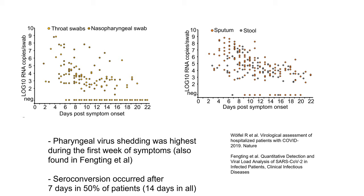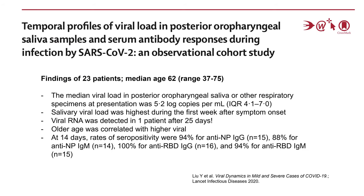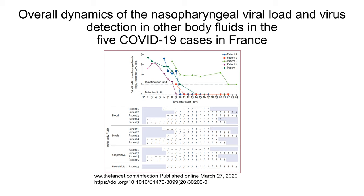Seroconversion occurs after seven days in about 57% of patients. Another study showed the overall dynamics of nasopharyngeal viral load and virus detection in other body parts across five COVID-19 patients in France. Importantly, one patient did have viremia, and this was also found in several other studies demonstrating that viremia may actually be predictive of poor outcome.